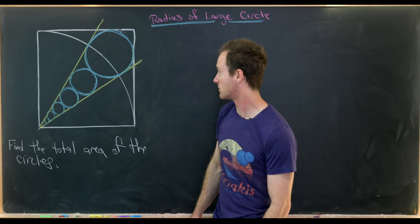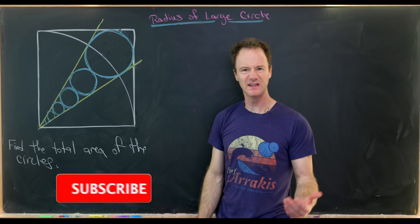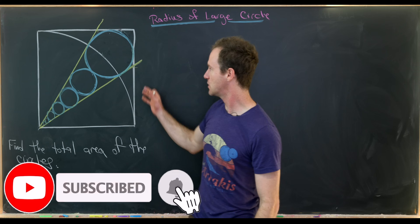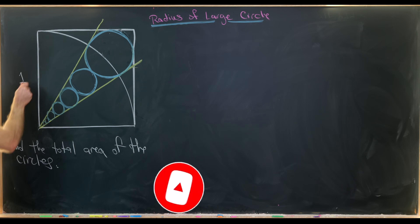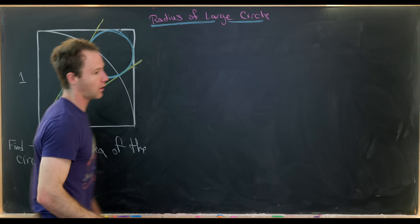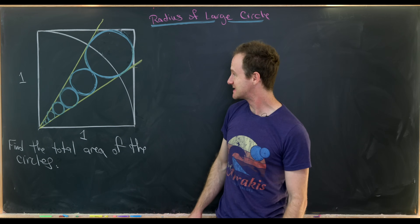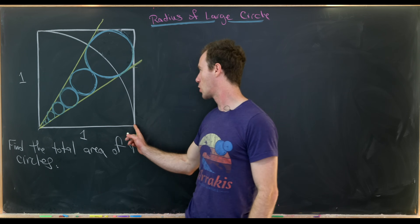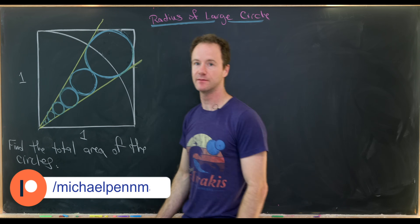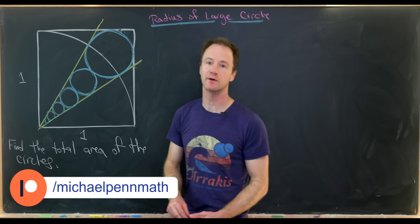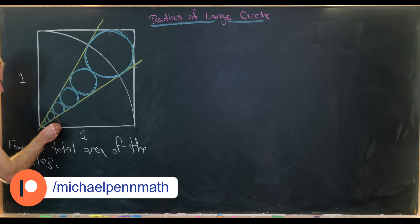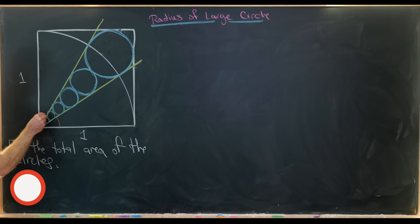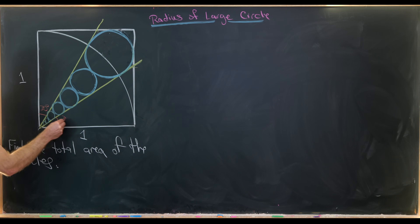Today I've got a nice geometry problem. So let's see the setup. Suppose we've got this unit square, so the side length is 1, and inside of this we have a quarter circle inscribed, and then we have two rays going from the bottom left of the unit square. They're situated so that this angle right here is 30 degrees and this angle right here is also 30 degrees.